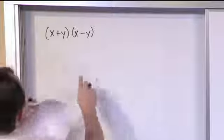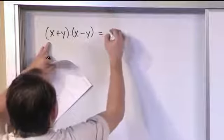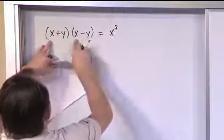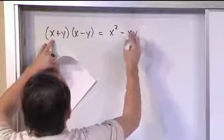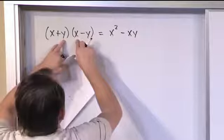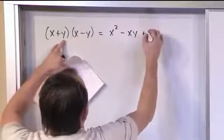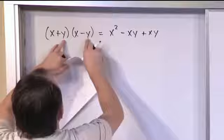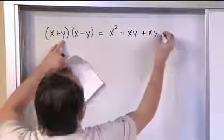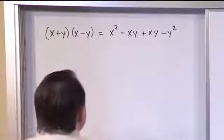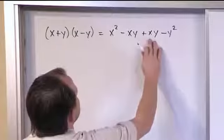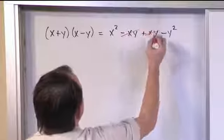Well, you can do FOIL. So you have first terms, which is going to be x squared multiplied together. Outside terms, since you have the negative y times the positive x, can be negative xy. The inside terms is going to be x times y. And the last terms is negative y times y is negative y squared. So that's all correct, but then you realize that negative xy cancels with positive xy, so they subtract to zero.